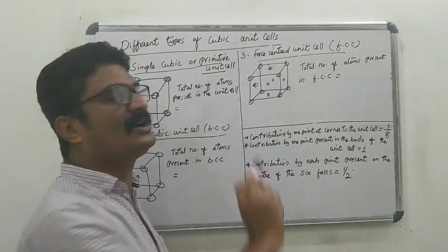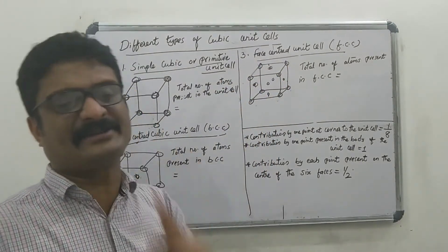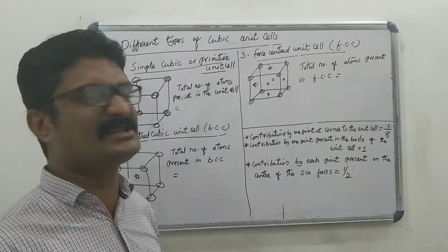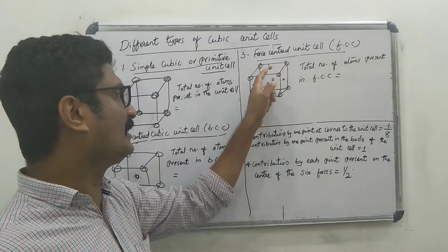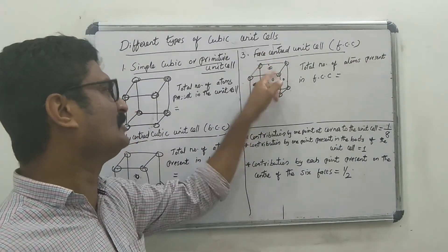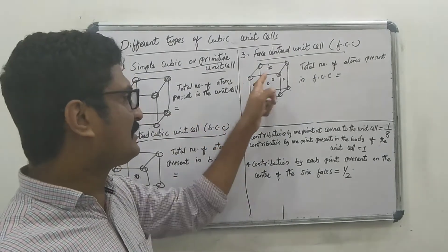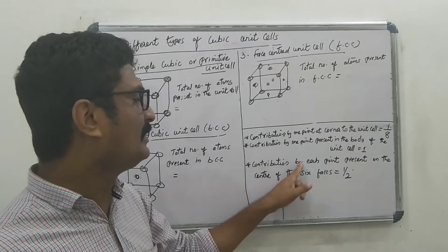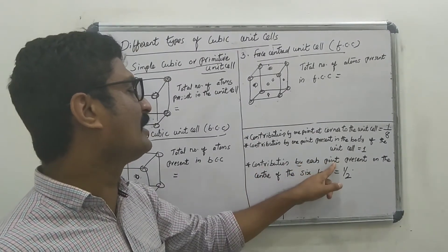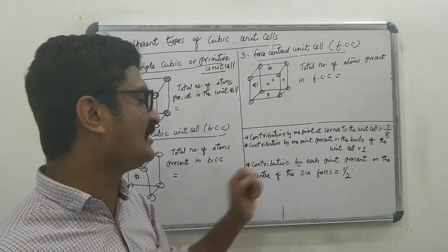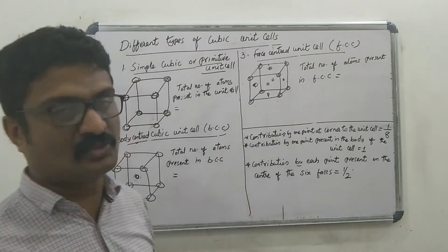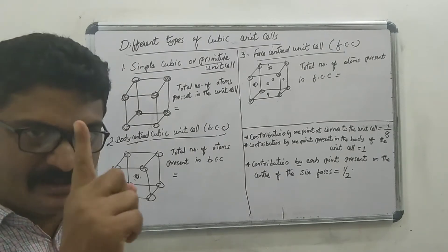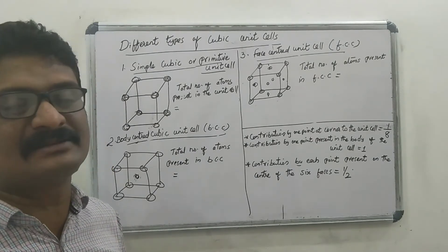In the face-centered position, one atom is shared by two unit cells. So the contribution of each face center atom is 1/2. To summarize: a corner atom contributes 1/8, a body center atom contributes 1, and a face center atom contributes 1/2.